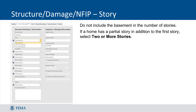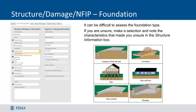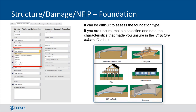Moving to the Structure, Damage, NFIP tab, this tab has many required fields that must be populated. Note that the Structure Type field offers you the option of switching the structure from residential to non-residential. In this exercise, we are assessing a residential structure, so no changes should be made to this box. You should select the correct number of stories for the structure being assessed, then select the residence type. SDE offers three choices, with single-family residence being the most common. The next data field requires you to select a foundation type, and the illustration shown demonstrates the six most common foundations in residential construction.